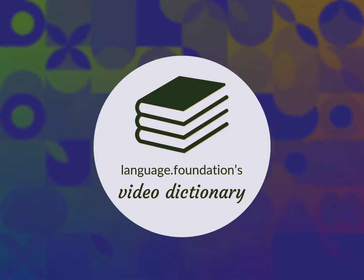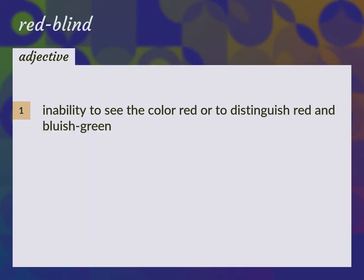Language.Foundation's Video Dictionary, helping you achieve understanding. Protonopic: inability to see the color red or to distinguish red and bluish green.